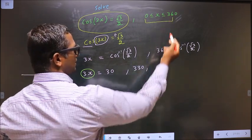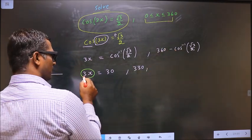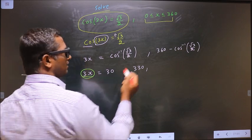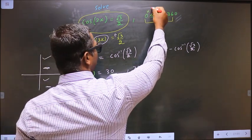Here, x lies in the interval 0 to 360 degrees. We should get 3x. For that, you multiply by 3.